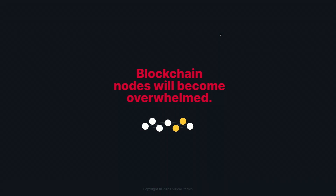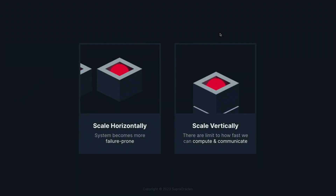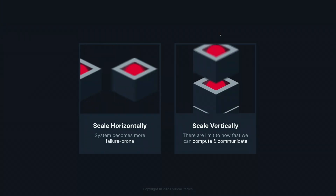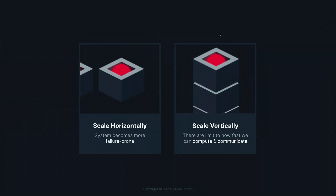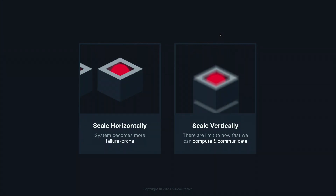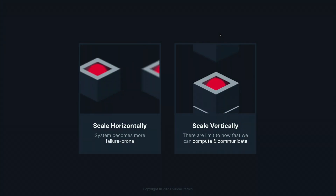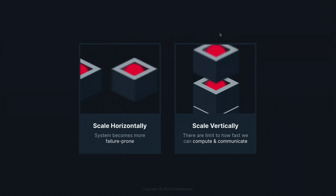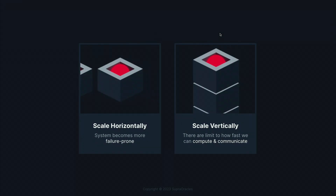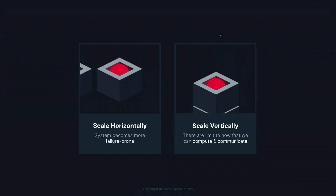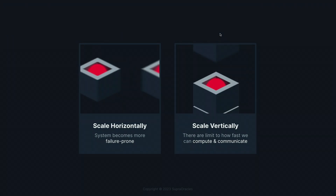How can we solve this problem? One thing we can do is scale horizontally — for every different set of systems, try to add more nodes and differentiate them across different systems. However, failures do not really grow in this fashion. If you keep adding nodes in a horizontal fashion, the system will become more error-prone.